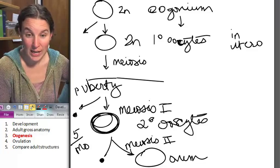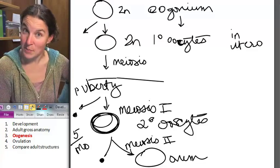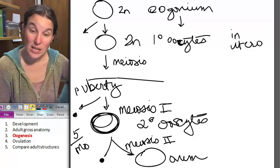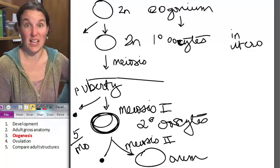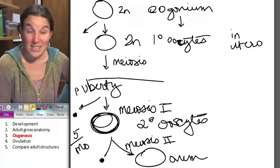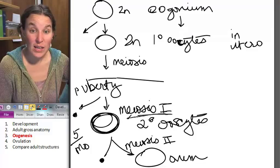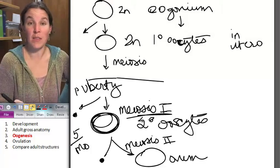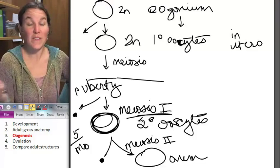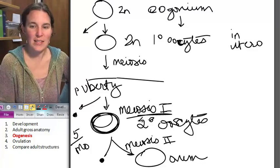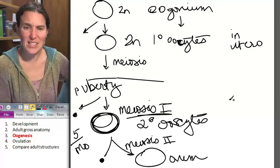You only finish meiosis II and actually become an ovum. This is so weird if you get fertilized. So I can count on one hand how many times my eggs finished meiosis because I know how many pregnancies I've had and that's it. All my other eggs, even the ones that once a month get ovulated, if it doesn't get fertilized, it doesn't finish meiosis. That is incredible. That is so cool.